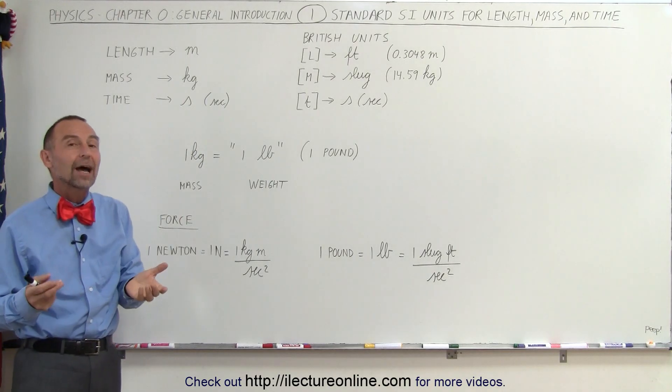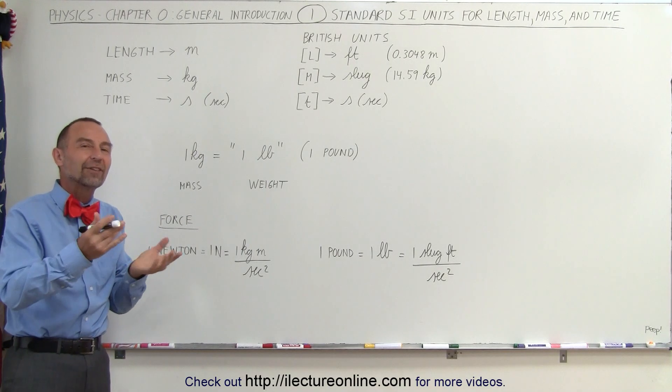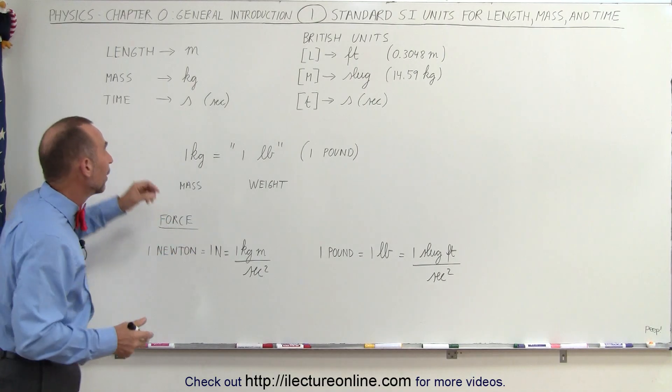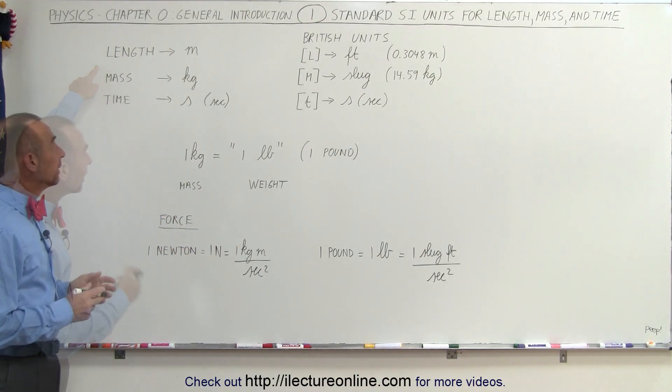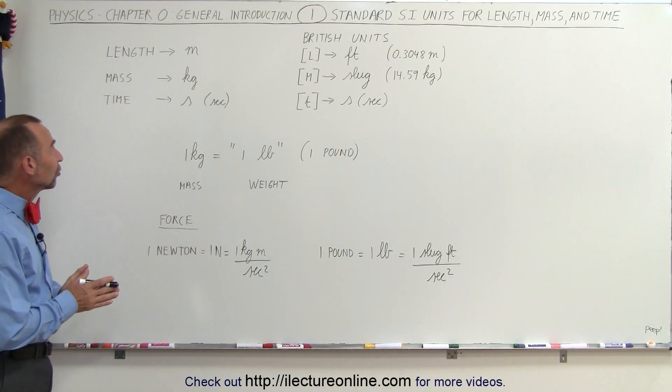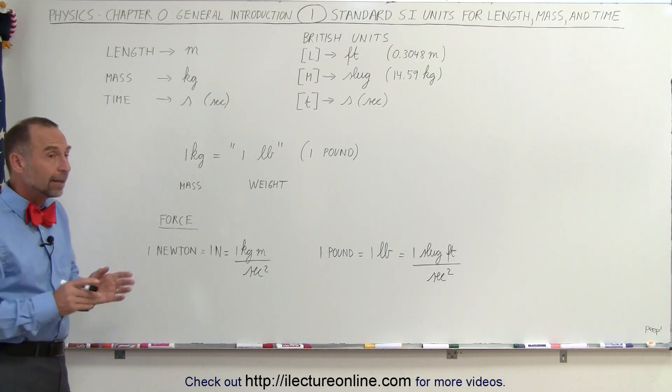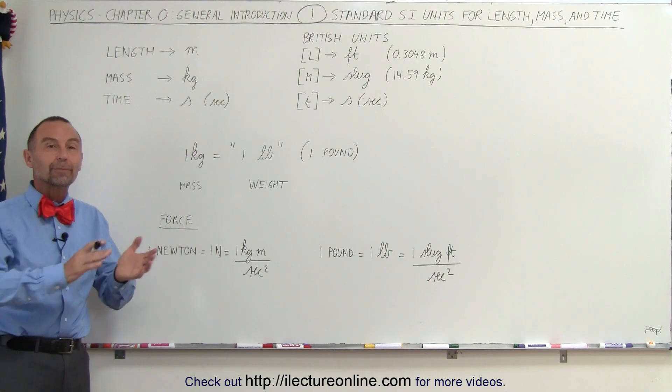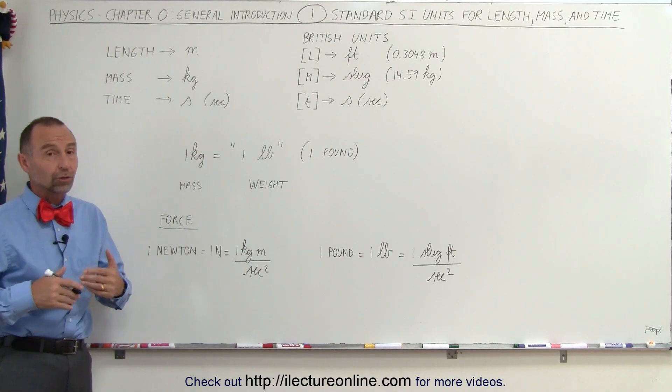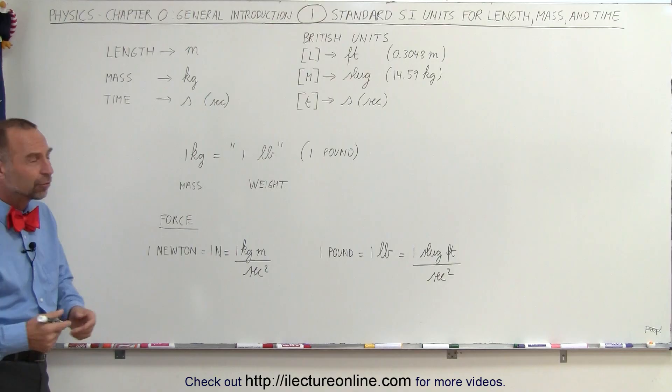We no longer use that now. We use a certain number of wavelengths of the emission of a particular atom. Now, these particular measures are the basis of all the other measures that we use in science and in physics. In some cases, we need some additional basic measures, such as the basic unit of charge, for example, is the electron.